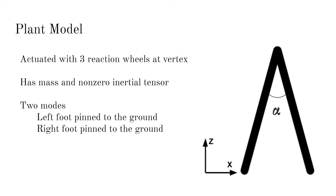The plant model consists of two massless legs separated by angular distance alpha. The body is actuated by three reaction wheels located at the vertex. Each reaction wheel is aligned with one of the body's principal axes.